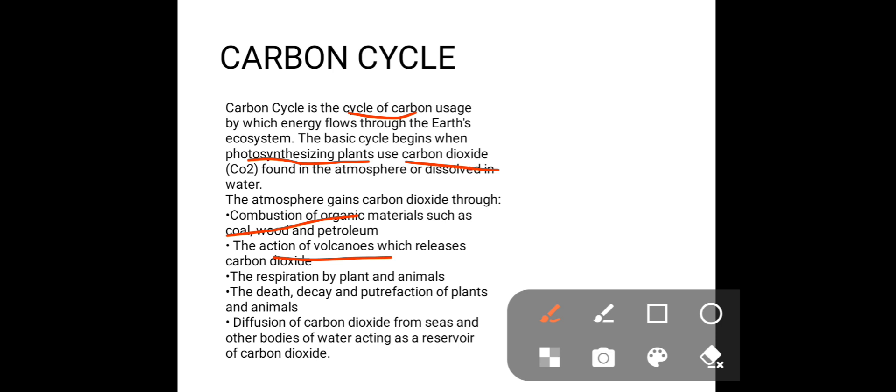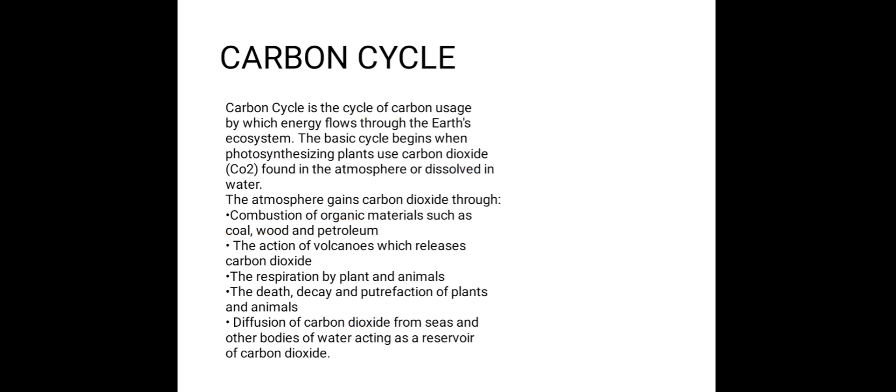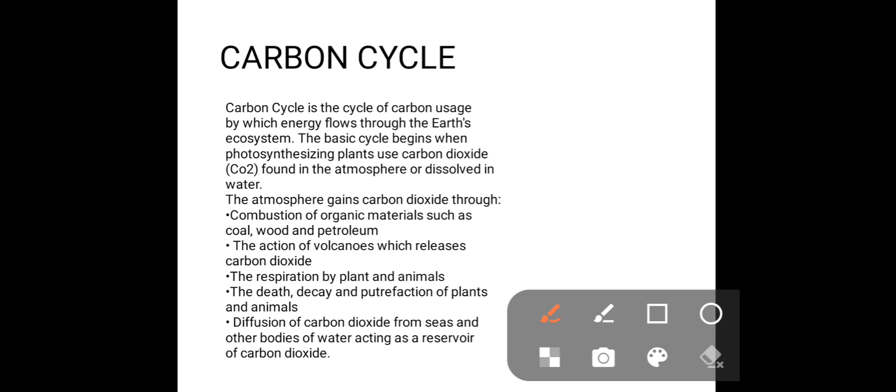We plants and animals, when we breathe out and respire, release carbon dioxide. Deaths of animals also produce some amount of carbon dioxide that gets released into the atmosphere. Even from the seas, carbon dioxide can diffuse into the atmosphere. All of these processes help the atmosphere to get back the carbon that has been lost.